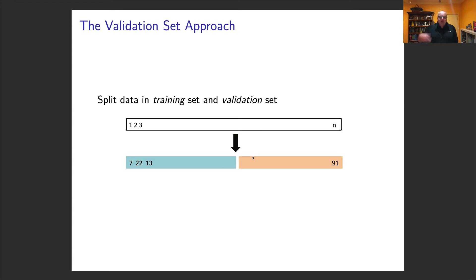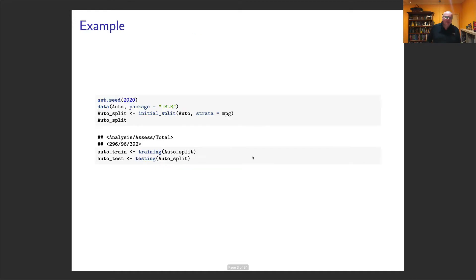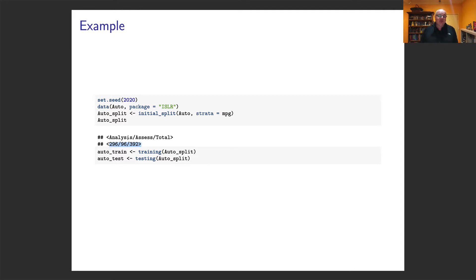The first approach is the validation set approach. You take your data and split it into a training set and a validation set. You train your model on the training data — the blue numbers — and then test it on the orange numbers. For example, using the auto data from the islr package, we do an initial split based on mpg. With 392 observations, 296 go into the training set and 96 are left over as the test data.